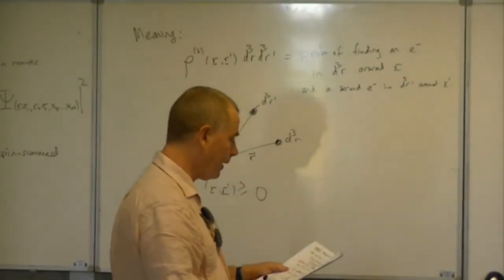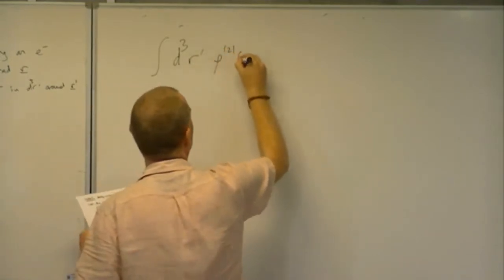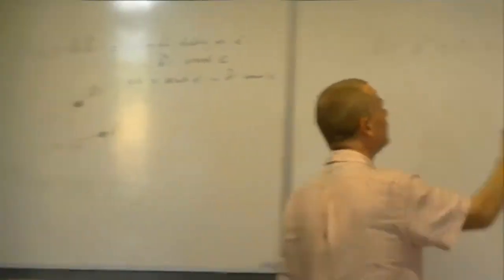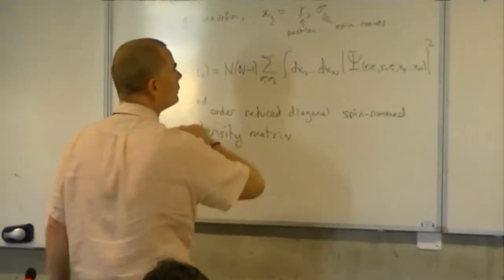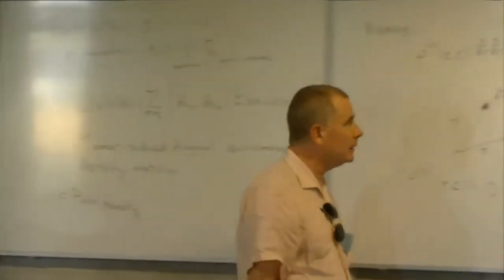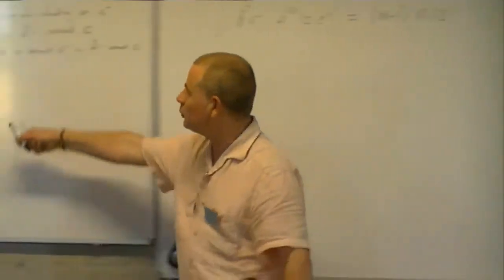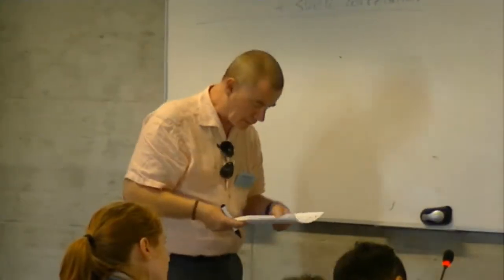An important normalization condition is that if we integrate over the second coordinate, this thing is going to be n minus 1 times n of r, right? If I integrate over one of these coordinates, it's just going to give me the density. That's what the density is. The density times d3r is the probability of finding any electron in just one volume around r. So it contains the information about the density, but it contains more. It tells us about correlations within the system, pair correlations.